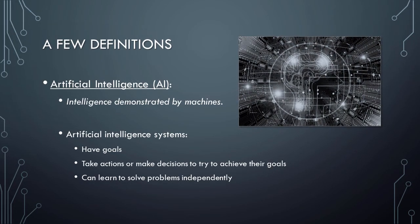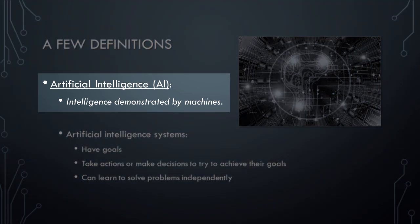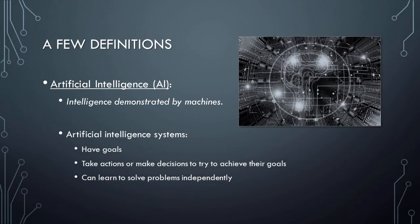Since this first lesson in the series is an introduction to artificial intelligence and cognitive computing, we should begin by defining these terms. Artificial intelligence, put simply, is intelligence demonstrated by machines. AI refers to any artificial device that perceives its environment and takes actions or makes decisions in an effort to successfully achieve its goals. Artificial intelligence systems are unique in that they can learn to solve problems independently. They do not need to be provided with a set of instructions in order to solve a problem or perform a task.